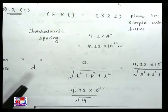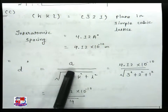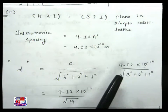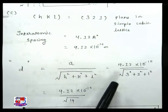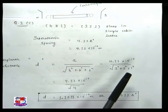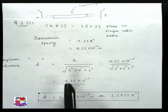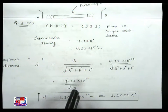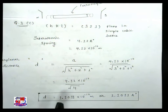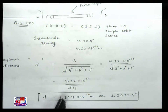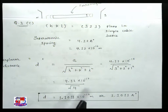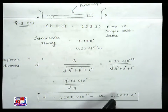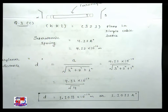When we are substituting the values, a is equal to 4.12 into 10 raise to minus 10. In the denominator it will be 3 square plus 2 square plus 1 square, which becomes under root 14. So by dividing and solving this equation, we are getting the value of d which is equal to 1.1011 into 10 raise to minus 10 meter.